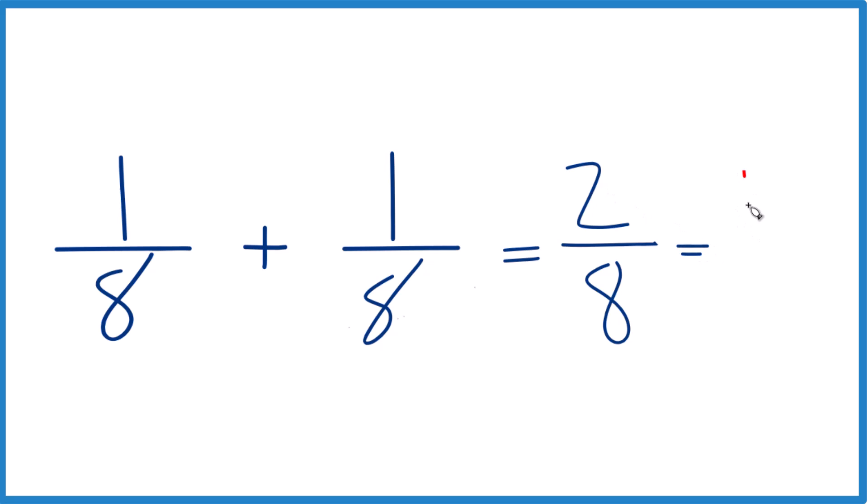So 2 divided by 2 is 1. 8 divided by 2 is 4. So 1/8 plus 1/8 equals 2/8, but it also equals 1/4. This is probably the preferred answer if you're doing this in school.